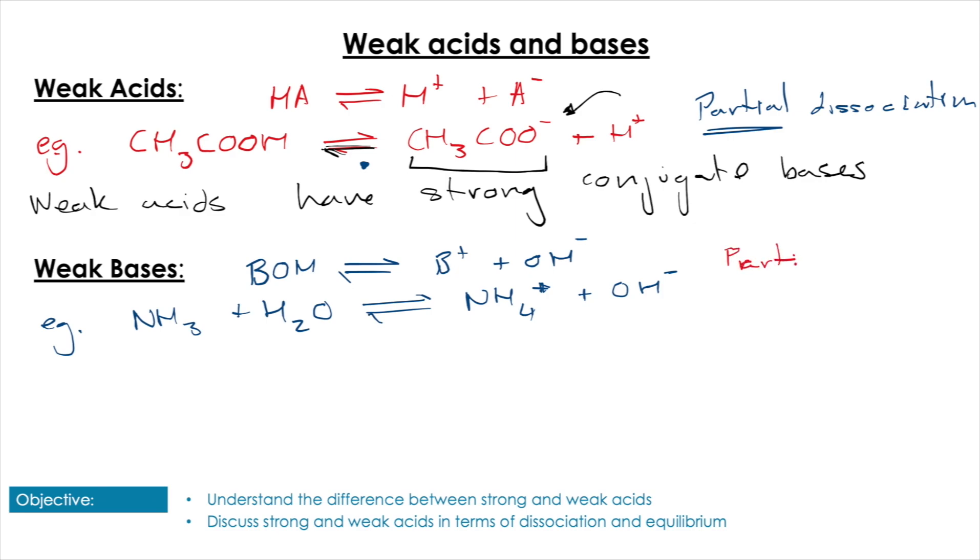And again, it's going to have that partial dissociation. That's the characteristic of weak bases. Prizes for guessing then, weak bases are going to have strong conjugate acids. That means the NH4+, its conjugate acid, is very happy to give up that extra proton, and so therefore it does participate in acid base reactions.